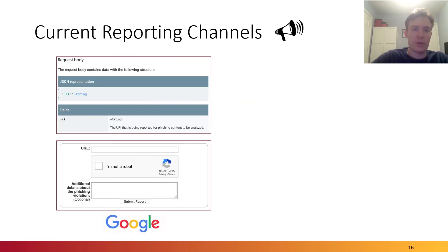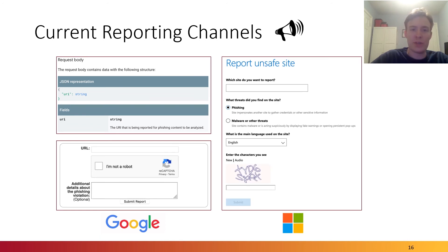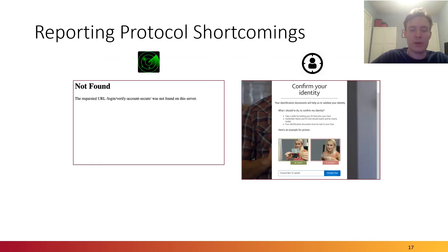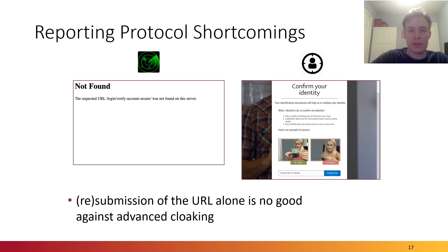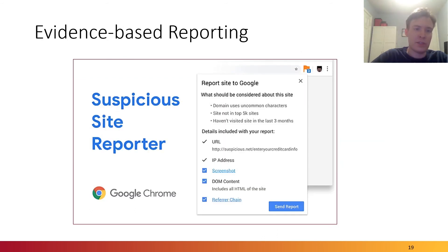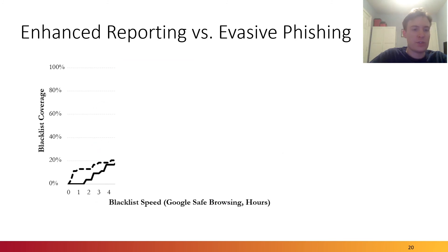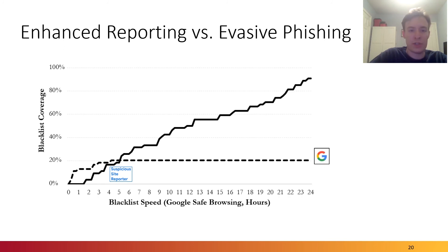Looking at ways in which phishing is currently reported, most major organizations accept the bare URL representing the phishing website. However, if the underlying backend systems fail to retrieve the content due to an evasion technique, even resubmissions of that URL may not result in blacklisting. In mid-2019, Google released the Suspicious Site Reporter Extension, which allows users to submit additional evidence such as IP addresses or redirection chains when reporting phishing through Google Chrome. We compared traditional URL reporting to this enhanced evidence-based reporting. Over the first four hours the traditional method was faster, but in the long term coverage continued growing for evidence-based reporting while traditional reporting plateaued. We therefore believe this is a very promising technology and recommend it for the entire ecosystem.